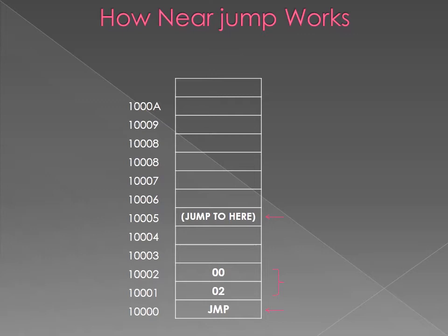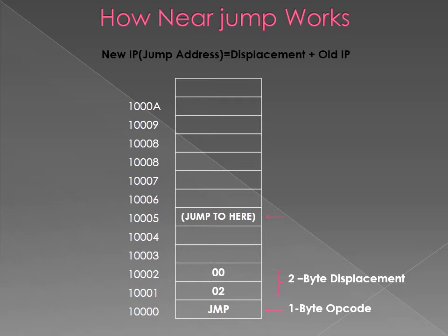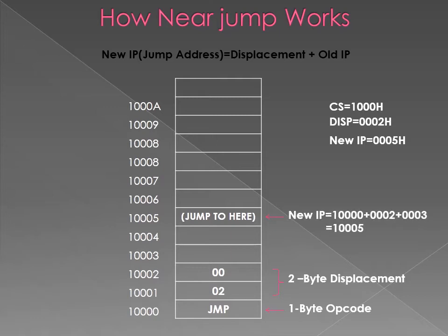Let's see how a near jump works. Suppose we have a memory segment from 10000 to 100003. Memory locations 100002 and 100003 contain a 3-byte jump instruction. Here, the code segment register contains 1000, displacement is equal to 0002, and old IP is 1003. To find the new IP, i.e., the jump address, we add displacement to old IP. On adding the code segment, old IP, and displacement, we get a jump address of 1005, taking us to memory location 1005.